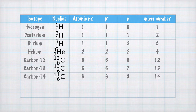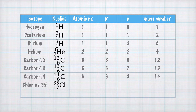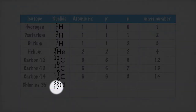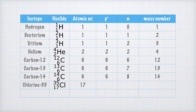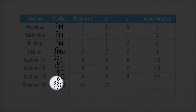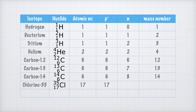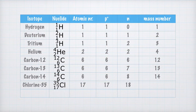We still have a couple of examples left. This time, we look at an isotope called chlorine-35. Its mass number is 35, and its atomic number is 17. This also means that the number of protons is 17. The number of neutrons: the mass number is 35, and since the mass number is the number of protons plus the number of neutrons, the number of neutrons must be 35 minus 17 equals 18. Because 17 plus 18 equals 35.